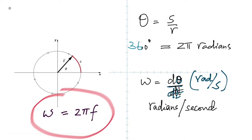If you have the frequency, you can find the angular velocity just by multiplying it with 2π. Why? How many radians is one rotation? Two π radians. So if it makes f rotations in one second, the total angle is 2πf in one second. That's why omega equals 2πf. So that's a very important formula.